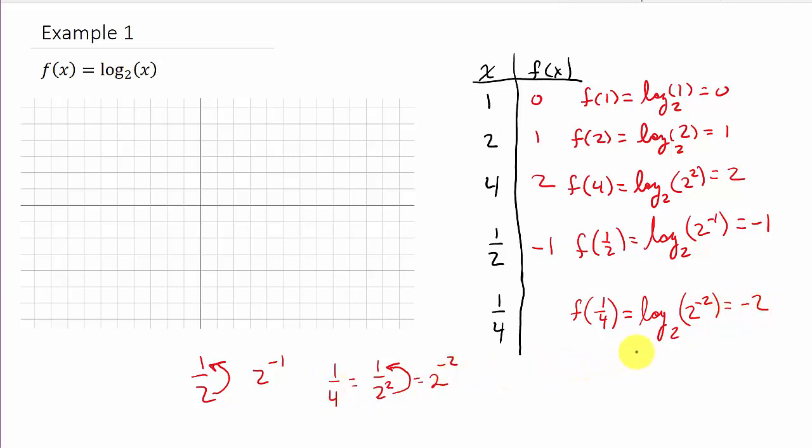Now normally I would show all these steps, keep going across, but I'm running out of room, so that's why I'm doing it over here. Alright, so now we have our points. So let's plot them. So I'm going to plot the point 1, 0, 2, 1. So over 2, up 1. 4, 2, so over 4, up 2.